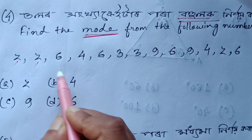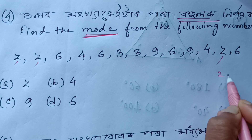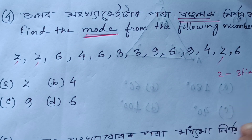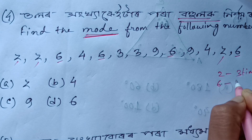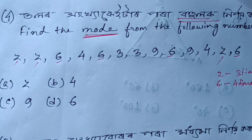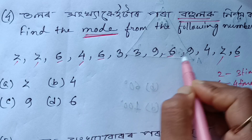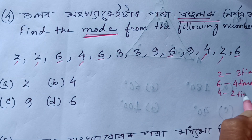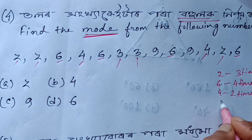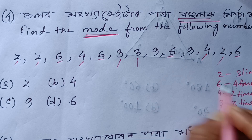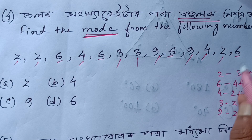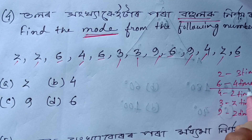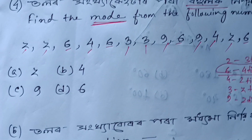2 appears 2 times. 3 appears 3 times. 6 appears 1, 2, 3, 4 times — 6 appears 4 times. 4 appears 2 times. 3 appears 2 times. 9 appears 2 times. So what is the right answer? The one that repeats most is 6, which appears 4 times. So the mode is 6.